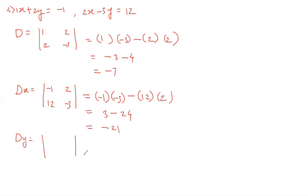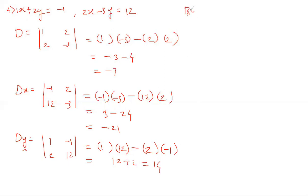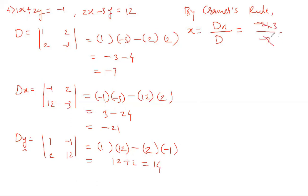Now we find Dy. Instead of y coefficients, we write the constants minus 1 and 12, while x coefficients 1 and 2 remain as they are. Solving: 1 times 12 is 12, and minus minus gives plus, 2 times 1 is 2. So 12 plus 2 equals 14. By Cramer's rule, x equals Dx over D: minus 21 divided by minus 7 equals 3. And y equals Dy over D: 14 divided by minus 7 equals minus 2.